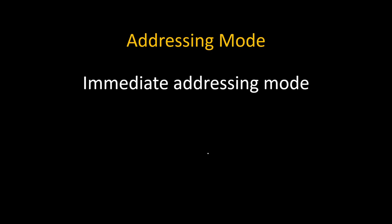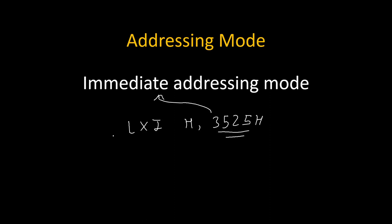The addressing mode of any instruction totally depends on the operand. In LXI, a 16-bit data is given — for example, LXI H, 3525H. Whenever you see data in the operand, its addressing mode becomes immediate addressing mode. A shortcut to remember this: if you see the letter 'I' in the instruction name, its addressing mode must be immediate. Another example is MVI, which also contains 'I' and uses immediate addressing mode.